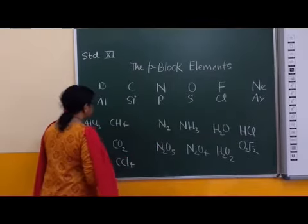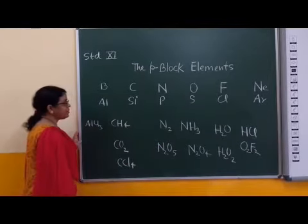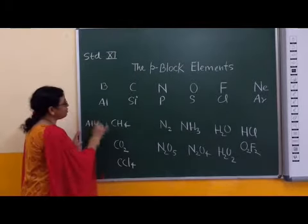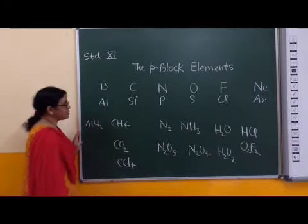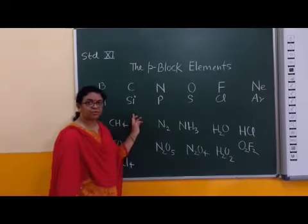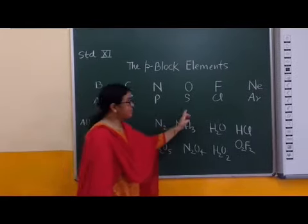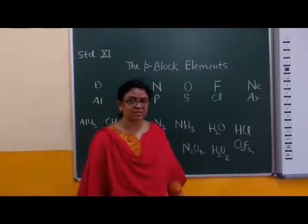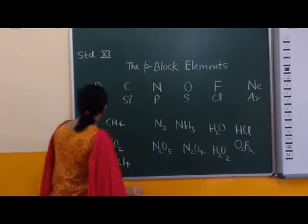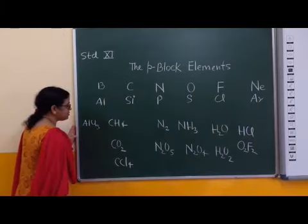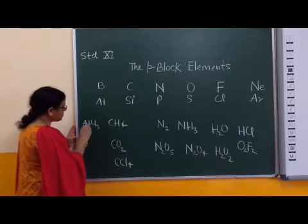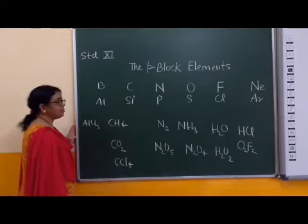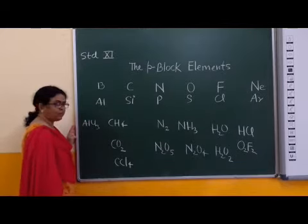Group oxidation state depends upon maximum number of valence electrons. Like in boron family, group oxidation state is plus 3, here plus 4, plus 5, plus 6, plus 7, plus 8. But other oxidation states of any element depends upon nature of second atom which is attached with element of p-block.